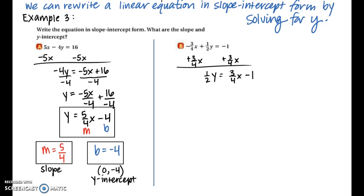In part b we have the equation negative three-fourths x plus one-half y equals negative 1. We want to isolate y, so the first step is to add three-fourths x to both sides, giving us one-half y equals three-fourths x minus 1. From there we multiply both sides by the reciprocal of one-half, which is 2. On the left side, the 2 and the one-half cancel, leaving y by itself.